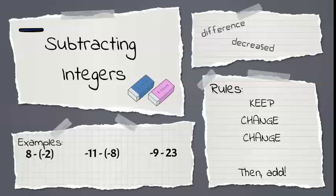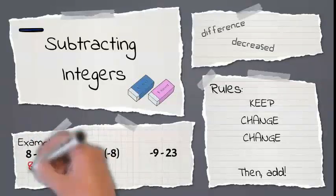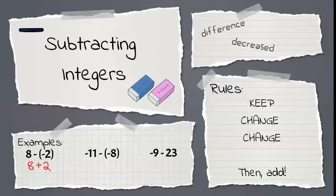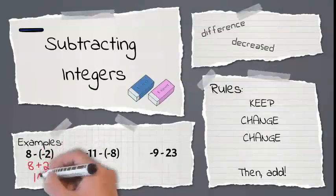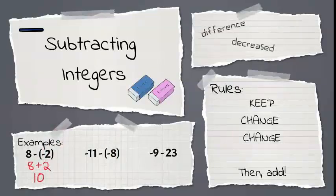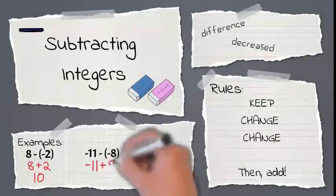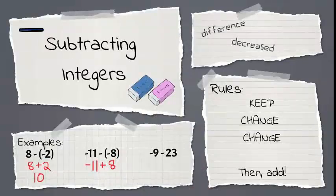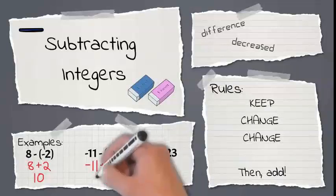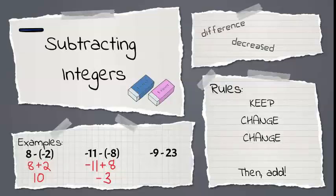Let's look at some examples. 8 minus negative 2: keep the 8, change minus to a plus, and change negative 2 to positive 2. And 8 plus 2 is 10. Next, we have negative 11 minus negative 8. Keep the negative 11, change the subtraction to addition, and change negative 8 to positive. We get negative 11 plus 8 — different signs — so we subtract and get 3. And negative 11 has a larger absolute value, so our answer is negative.